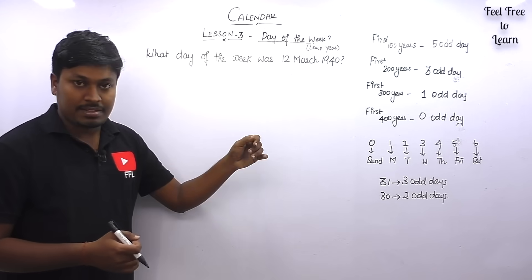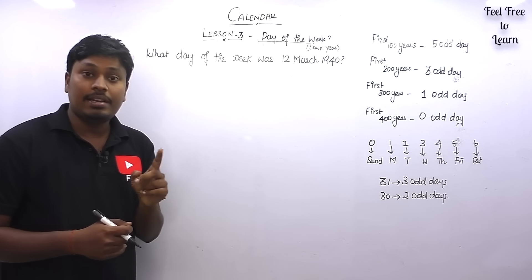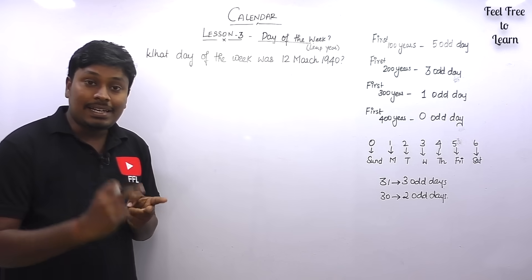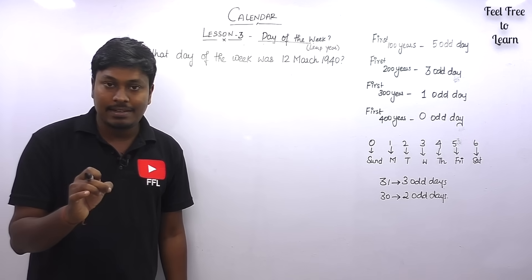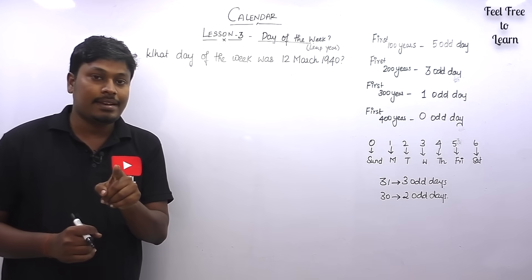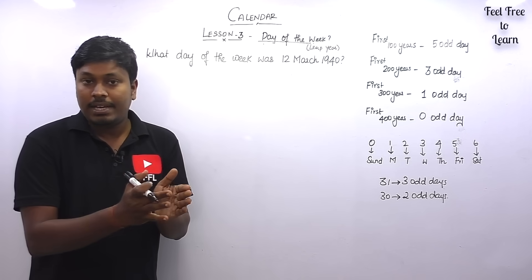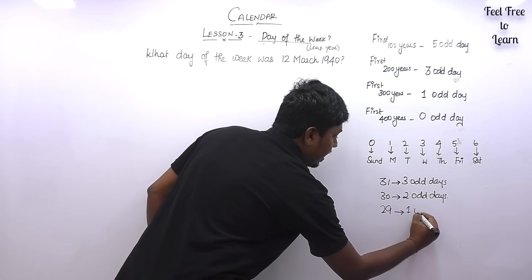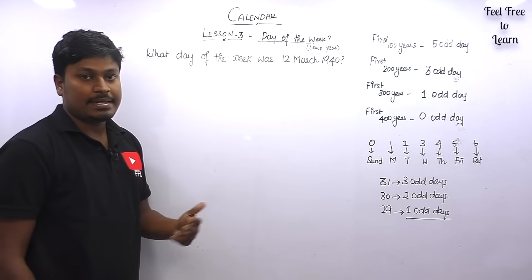Now we are going to solve 5 questions based on a leap year. Remember: a month with 31 days has 3 odd days, a month with 30 days has 2 odd days. For an ordinary year, February has 28 days giving 0 odd days, but in a leap year February has 29 days — splitting into 4 weeks (28 days) plus 1 odd day. So February in a leap year gives 1 odd day. This is the major difference between lesson 2 and lesson 3.